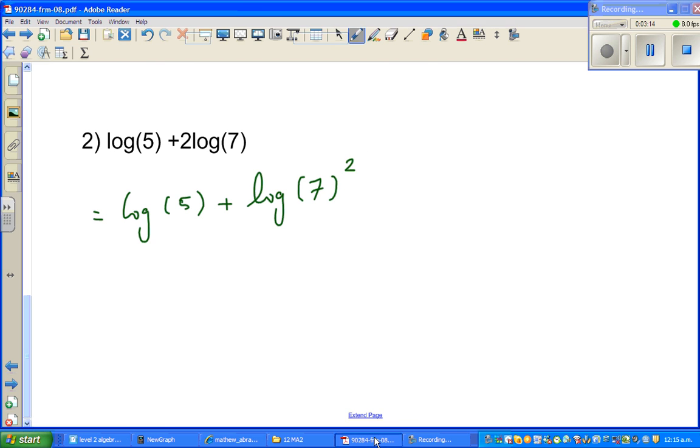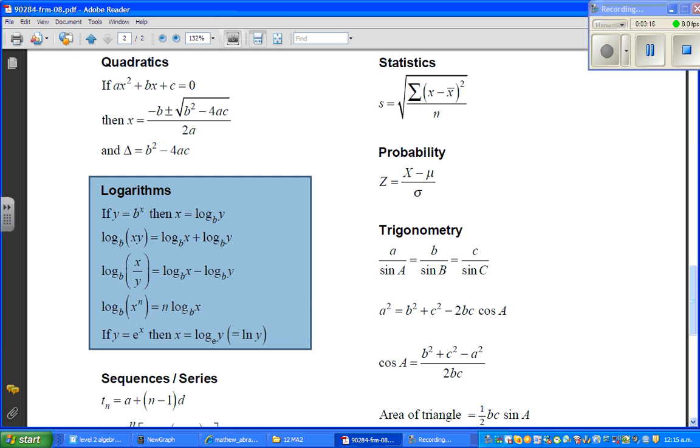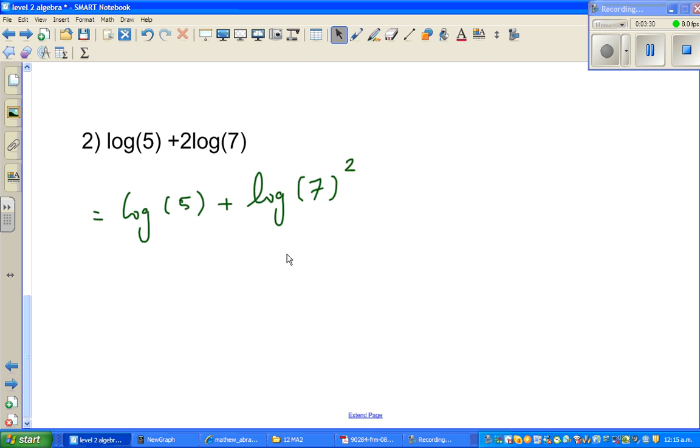So this is same as log 5 plus 2 log 7 is nothing but log of 7 squared. Again, I will show you the formula. This formula is this formula looking backwards. So, n log x is log of x to the power n. So, we had 2 log, 2 log something is log of x to the power n. So, 2 log 7 is log of 7 squared. So, this is same as log of 5 plus log of 49.